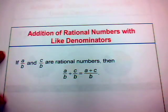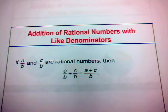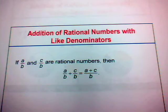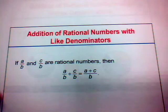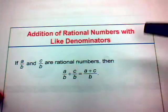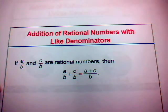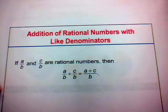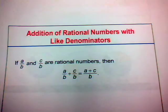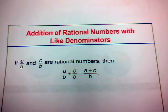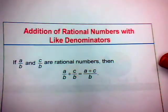Now let's look at the addition of rational numbers with like denominators. If you have a over b and c over b, they're both rational numbers, then a over b plus c over b is going to be equal to a plus c over b. In other words, we just add the numerators and keep the same denominator. So two-fifths plus one-fifth equals three-fifths — that's adding two fractions with the same denominators.